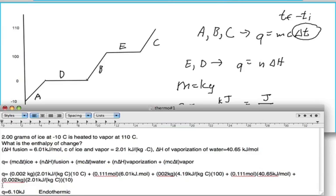Whereas if it was exothermic, it would give q of a negative value. However, in this question we have q equals positive 6.10 kilojoules. Therefore, when ice is heated from minus 10 all the way to 110 degrees Celsius, it is an endothermic reaction.